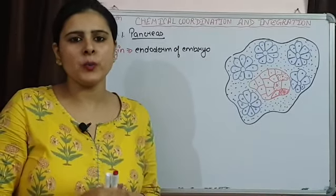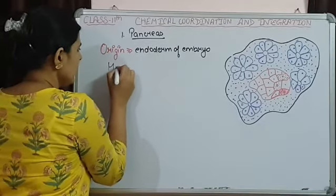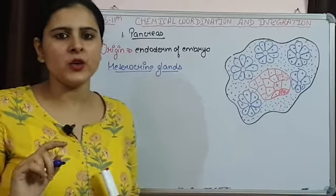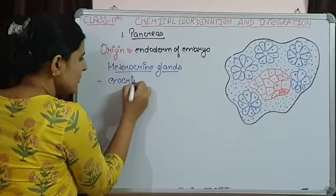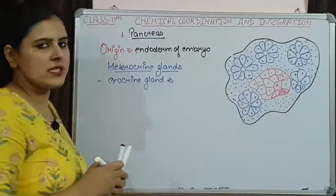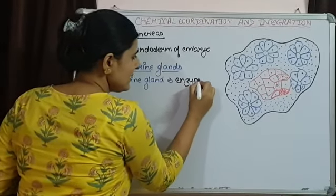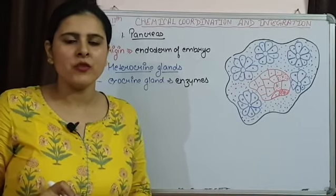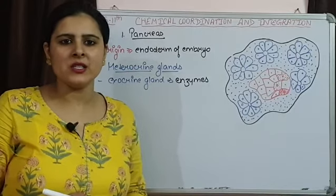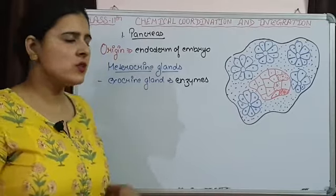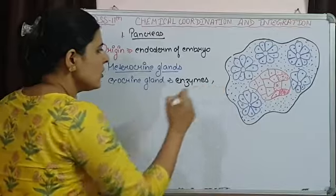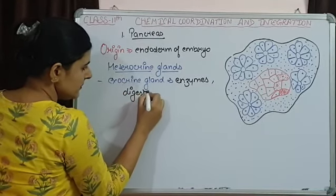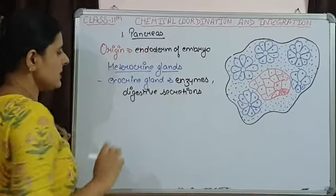Another important thing about pancreas is that it behaves as a heterocrine gland. Heterocrine glands are those which have both exocrine as well as endocrine function. Pancreas behaves as an exocrine gland because it is responsible for secretion of enzymes involved in digestion of proteins and carbohydrates — pancreatic amylase, trypsin, chymotrypsin — and also increases secretion of digestive juices. This is the exocrine part.